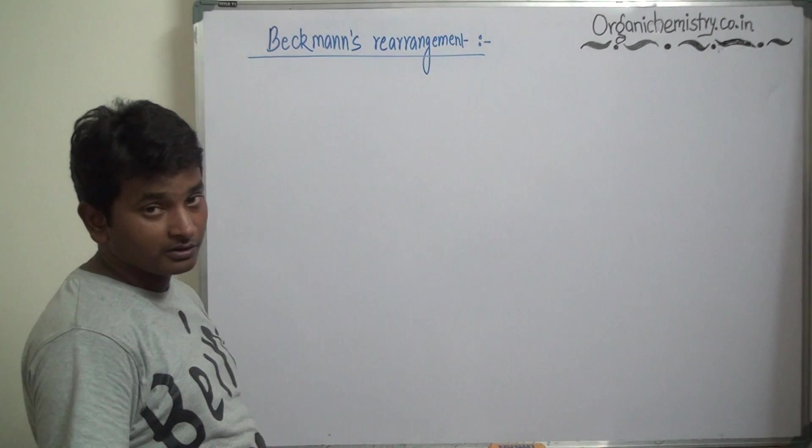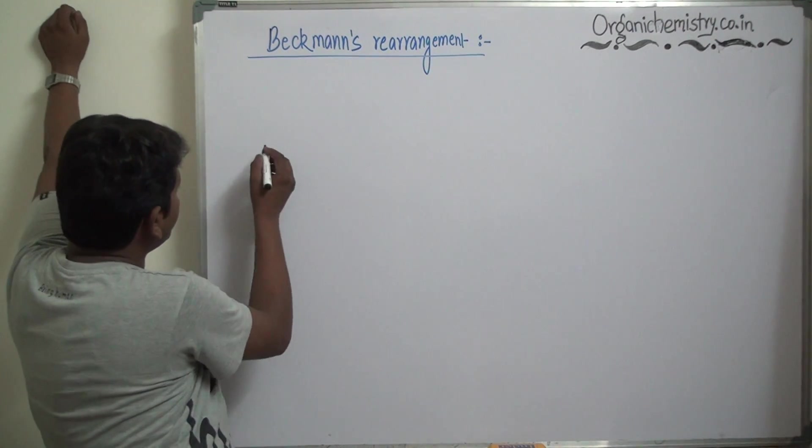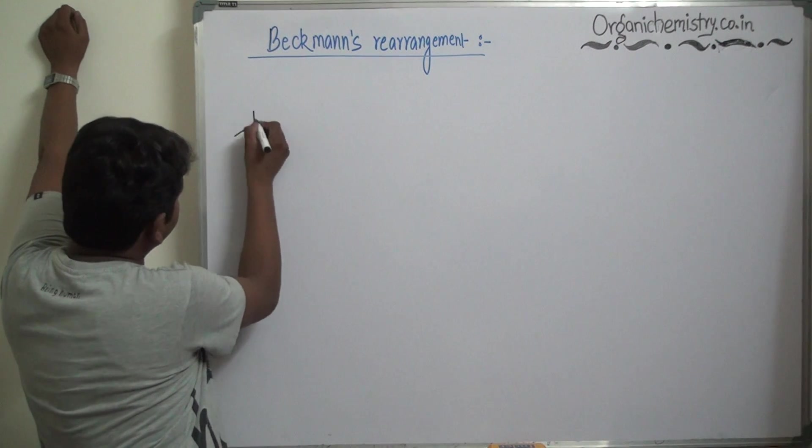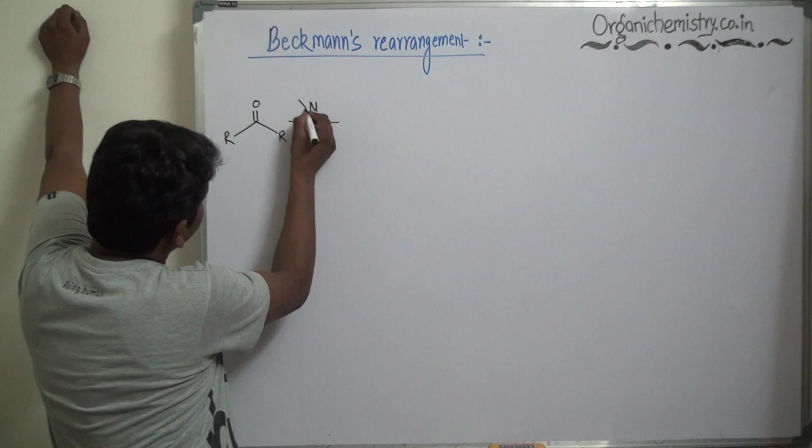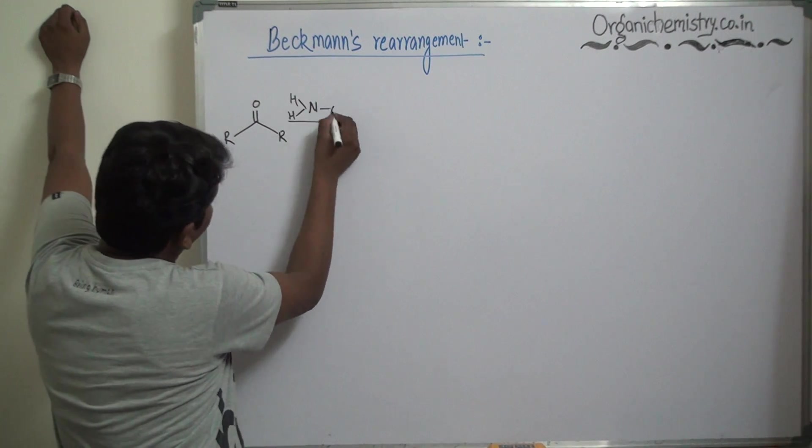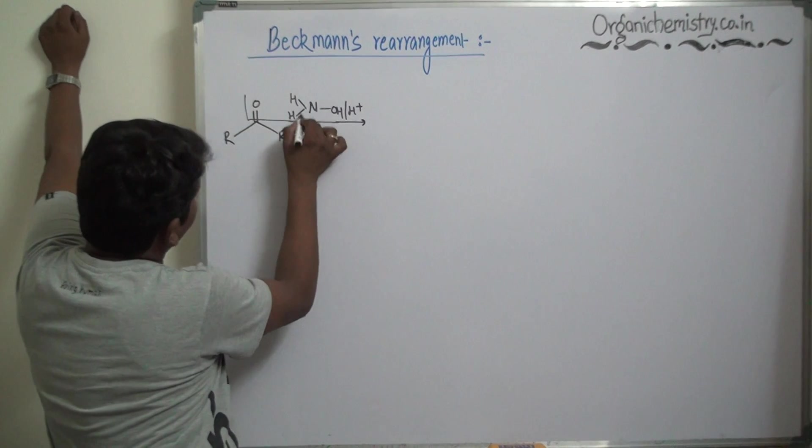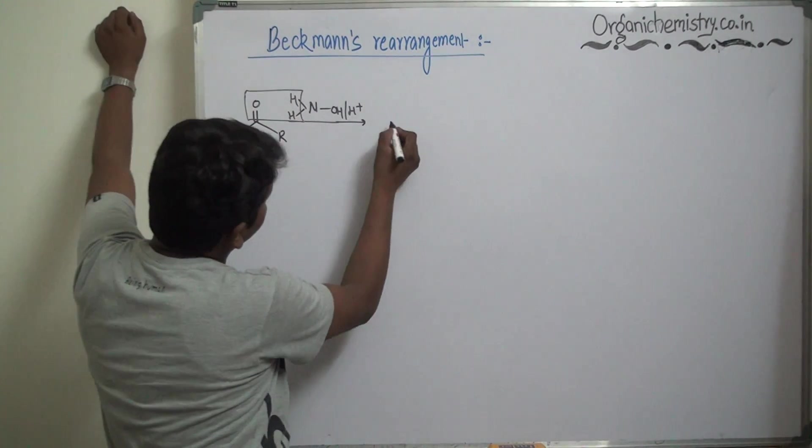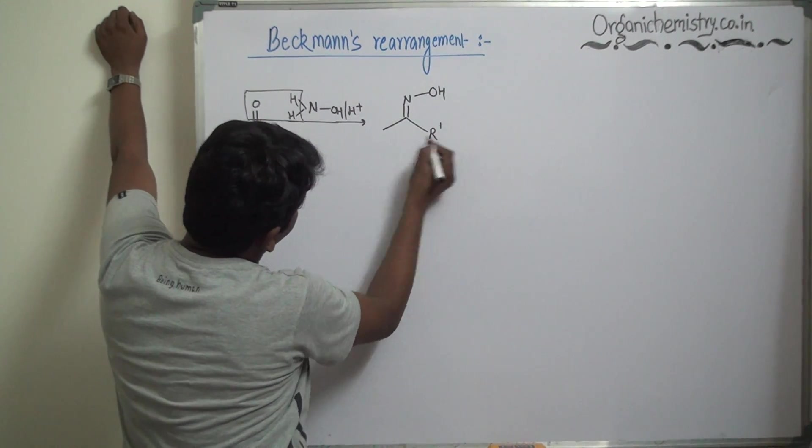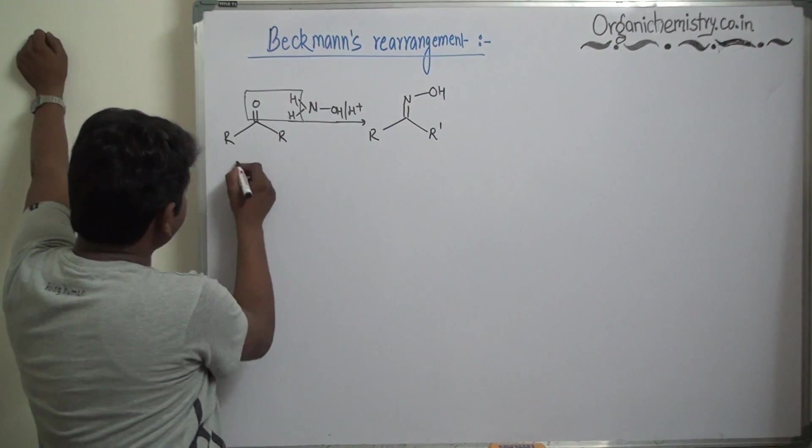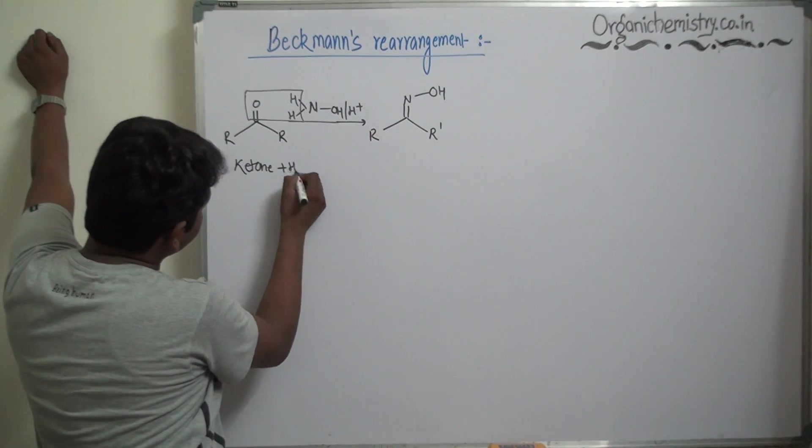Beckmann's rearrangement. The substrate for Beckmann's rearrangement is obtained on reaction of ketone with hydroxylamine in presence of acid. This water molecule is removed and finally ketoxime is obtained. This is ketone on reaction with hydroxylamine give ketoxime.